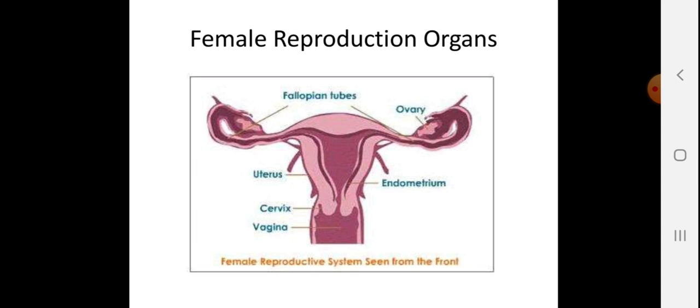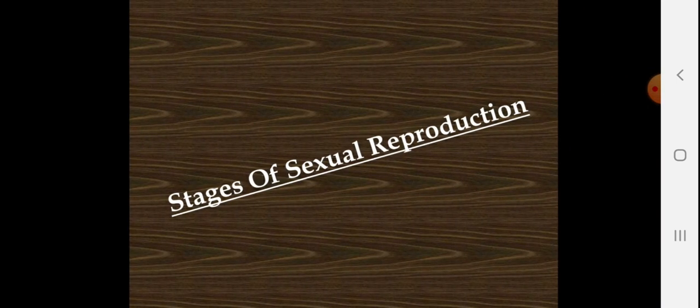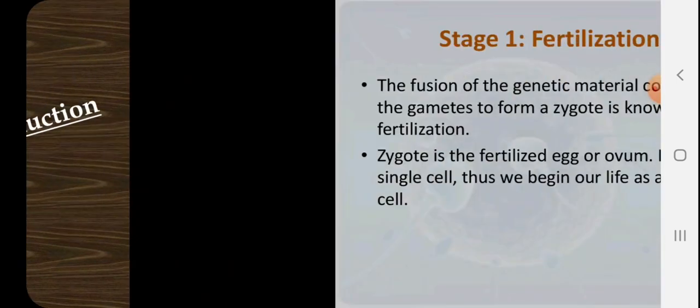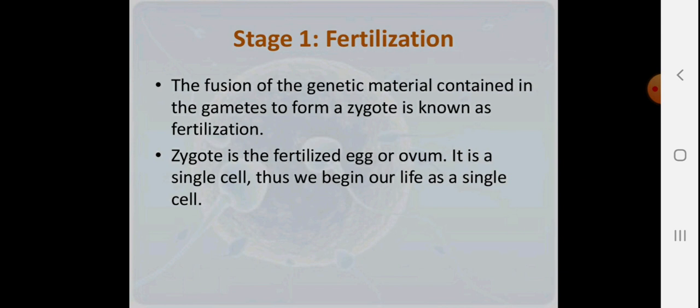The stages of sexual reproduction — Stage 1 is fertilization. Fertilization is when male and female sex cells, or gametes, fuse together after copulation. Simply put, the fusion of genetic material contained in the gametes to form a zygote is known as fertilization.